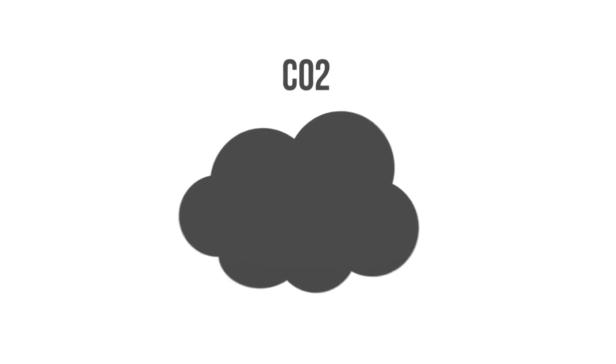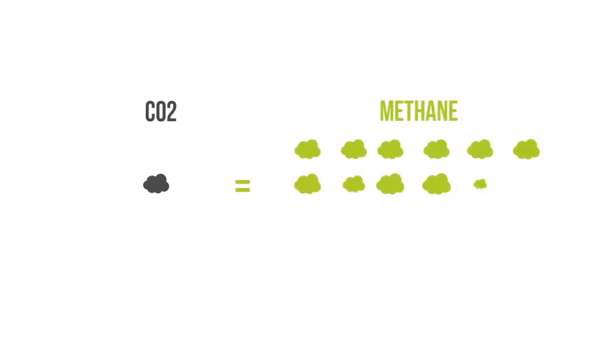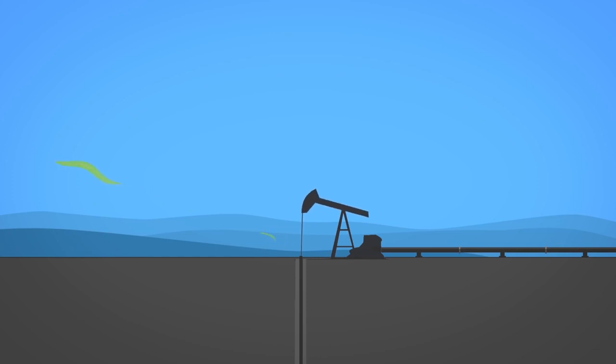Despite fewer emissions, natural gas is still a source of CO2. In addition, methane is a potent greenhouse gas itself, having nearly 24 times the impact of CO2. During the extraction and transportation process, natural gas can escape into the atmosphere and contribute to climate change.